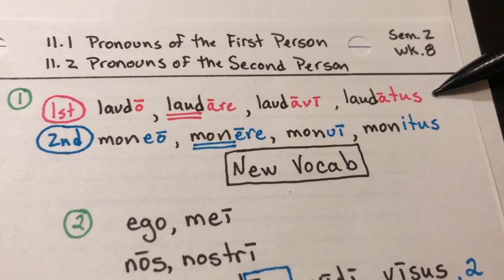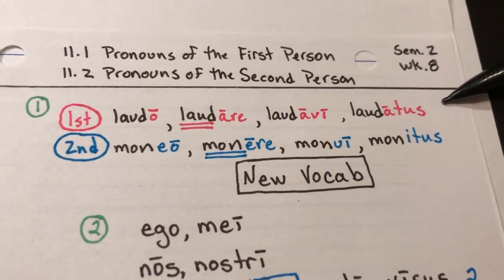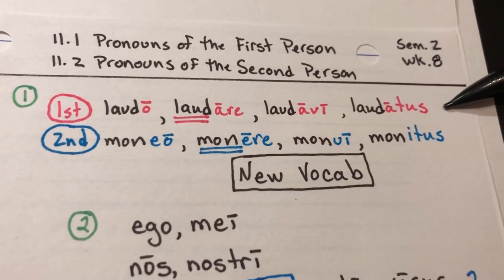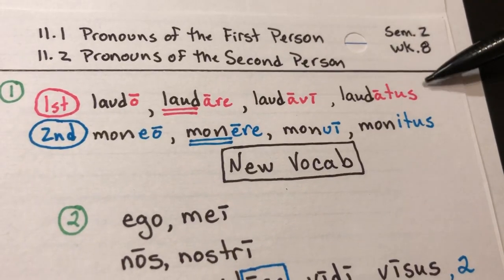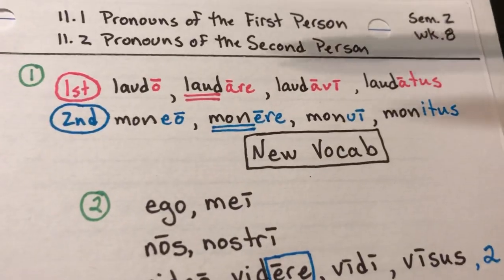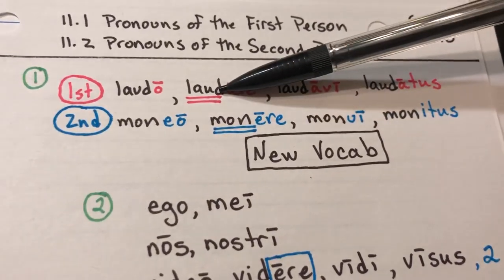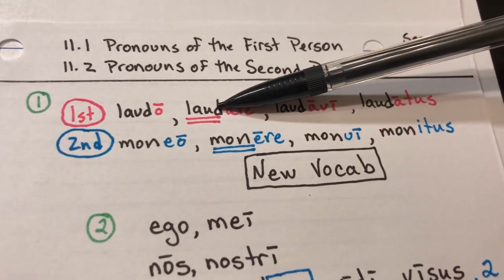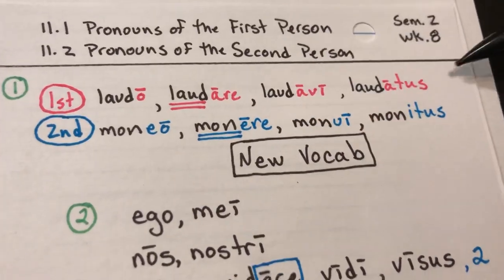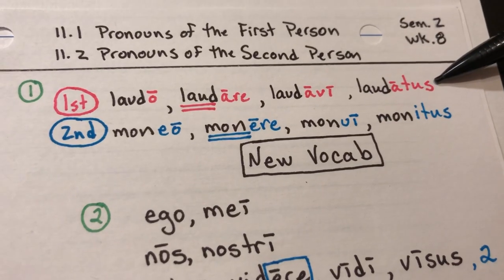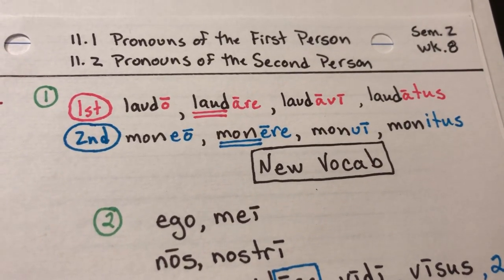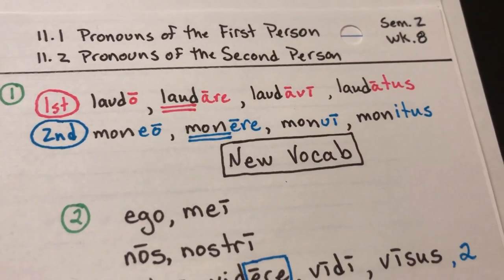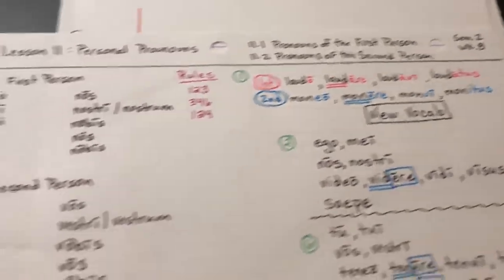We'll probably do this every week — review the basic form for each of the conjugations, repeating the endings over and over, maybe throwing in another first conjugation verb. We'll review what those endings are and the fact that we find our stem for all the verb tenses we know so far from the second principal part. We did that with the first conjugation — porto, portare, portavi, portatus — and with moneo, repeating those several times to get the flow and rhythm of that pattern.